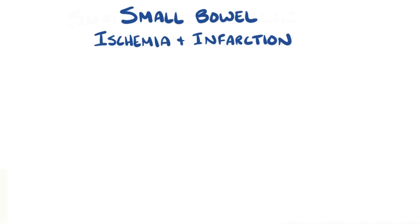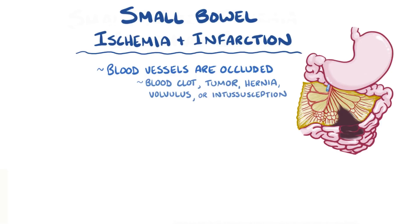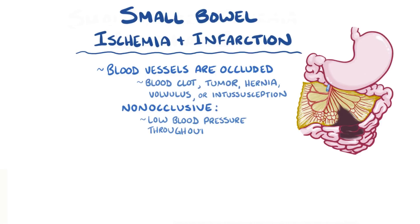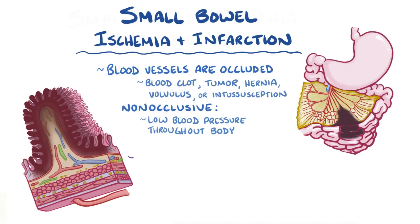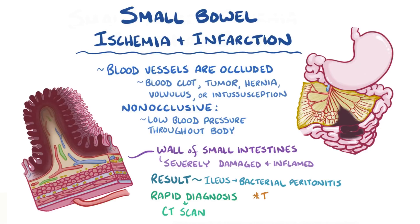As a quick recap, small bowel ischemia and infarction can happen when blood vessels are occluded from something like a blood clot, a nearby tumor, a hernia, a volvulus, or intussusception. It can also happen due to a non-occlusive event, like low blood pressure throughout the body. In either situation, the wall of the small intestines can be severely damaged and inflamed. The result can be anything from an ileus to bacterial peritonitis. Rapid diagnosis by CT scan and treatment to reestablish blood flow are essential to survival.